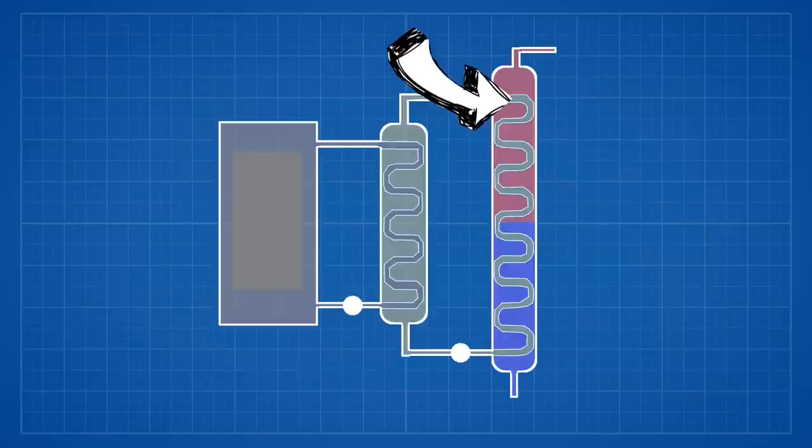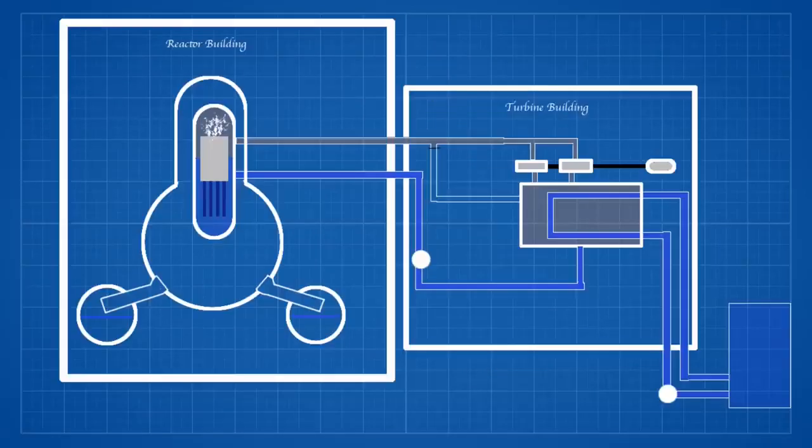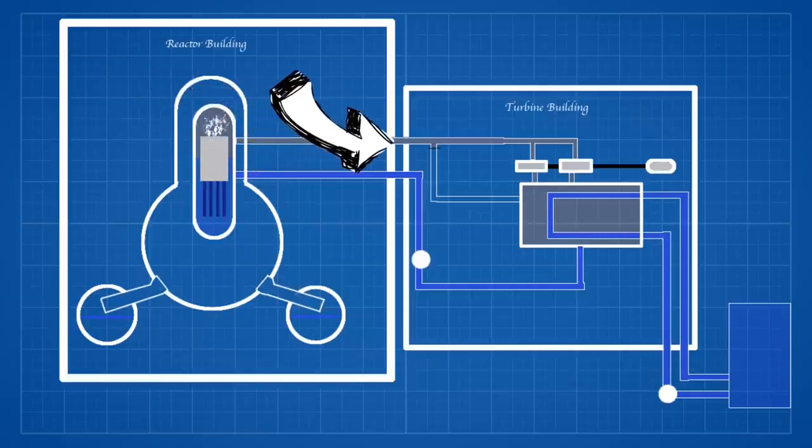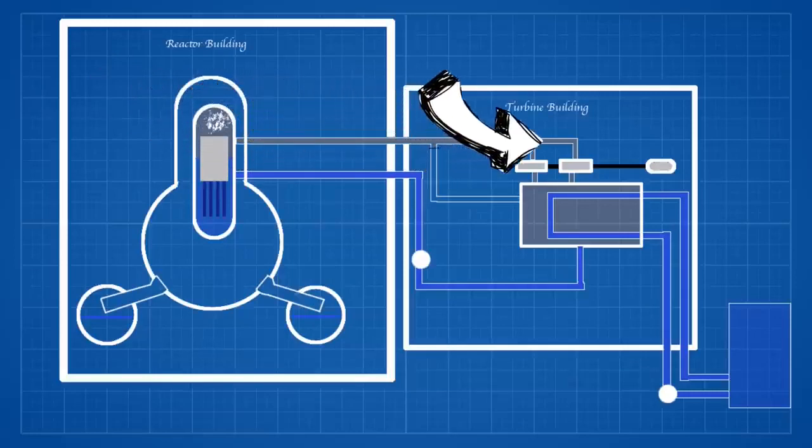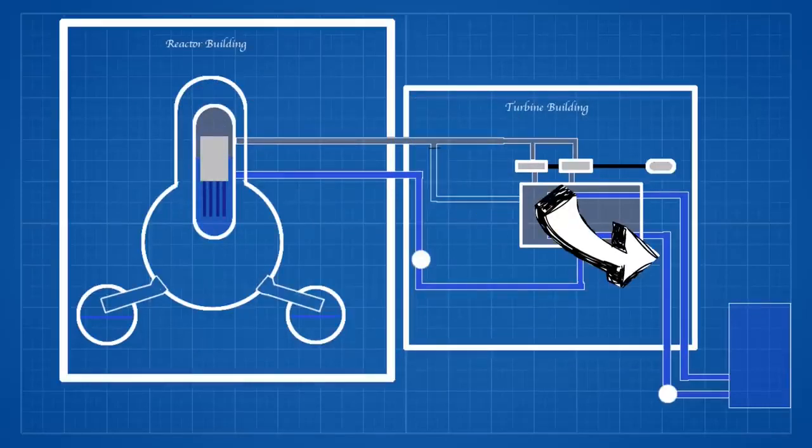However, unlike a PWR which uses the heat of the coolant to create steam in a secondary coolant loop, in a BWR the boiling of the primary coolant is used for the steam. The steam is collected in the top of the reactor before passing towards the turbines. The steam generated from fission passes through the turbine, after which it goes to a condenser to be returned back to water.